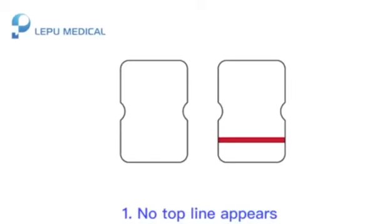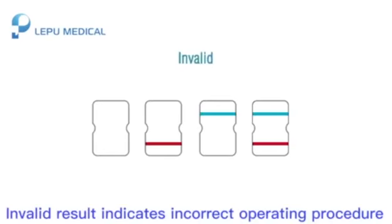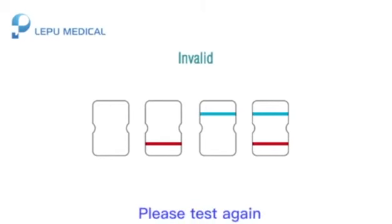The test result is invalid if: 1. No top line appears, or 2. The top line remains blue. An invalid test result indicates an incorrect operating procedure or that the test card has deteriorated. Please test again.